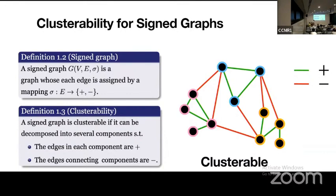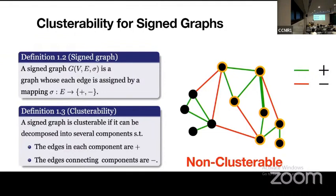If we have a sign graph, we call the graph classable if we can decompose it into several components such that positive edges connect vertices in the same component, while negative edges connect vertices belonging to distinct components. As we can see, this graph is classable. However, if we change the sign of a single edge, the graph becomes non-classable. To learn clusterability exactly requires Omega(N) queries to the graph, since we have to learn the information of all edges. The question is whether we can do better — in sublinear time in an approximated manner.